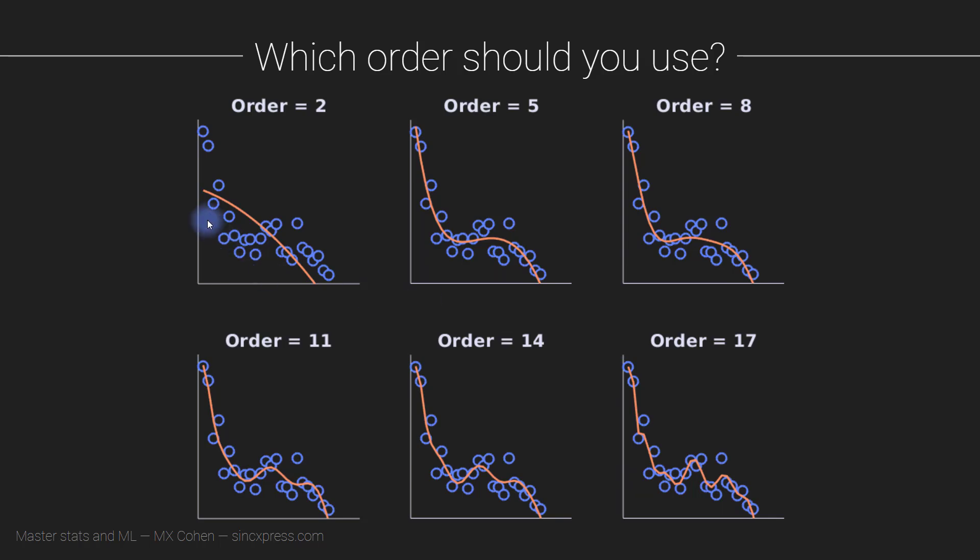So how do we know what order the polynomial should be? That's a good question. Here, you see an example of this data set that I showed in the previous slide, with an order of two. So visually, this doesn't look good, right? I mean, the model is trying to fit the data, it gets an A for effort. But this is just not a good model. And here we have increasingly higher orders.